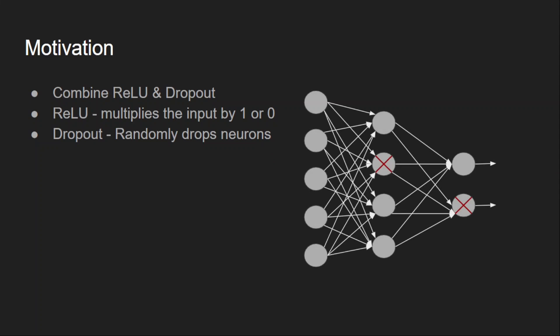Dropout randomly drops some neurons to create a regularization effect, so dropout kind of multiplies the inputs with zeros. There is no deterministic algorithm deciding which neuron to drop — it does so randomly. Now we merge these two functionalities and create a new activation function called GELU.